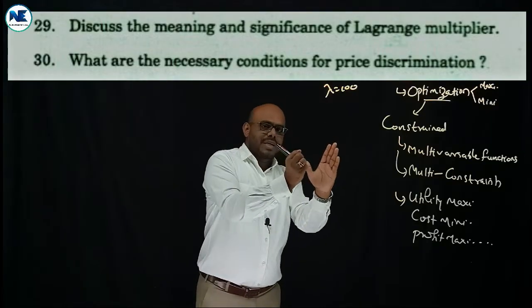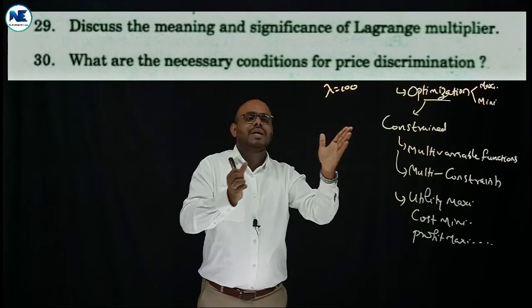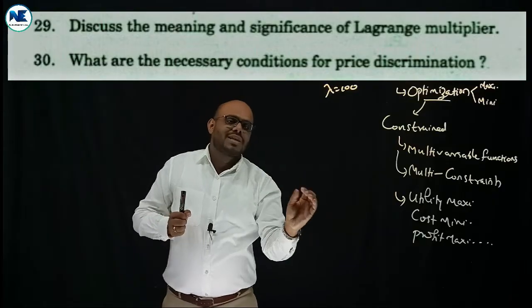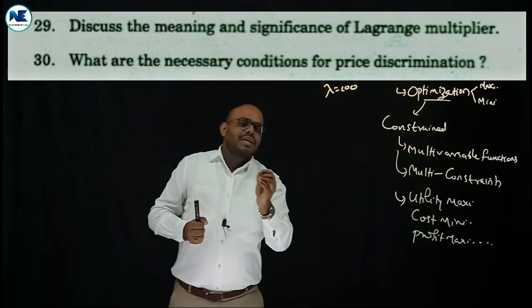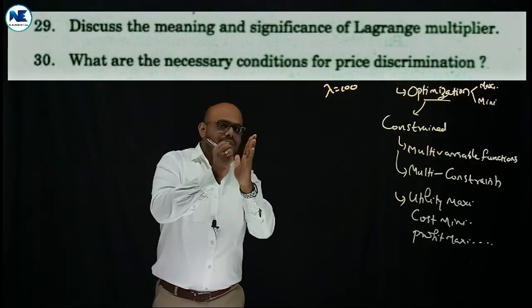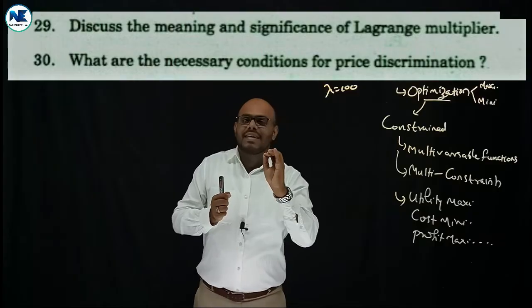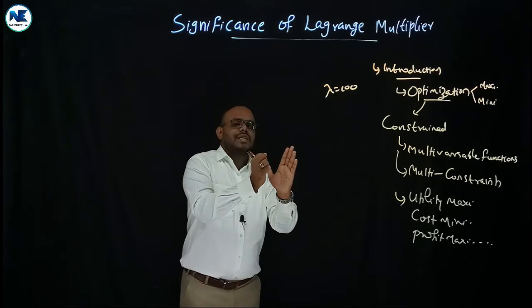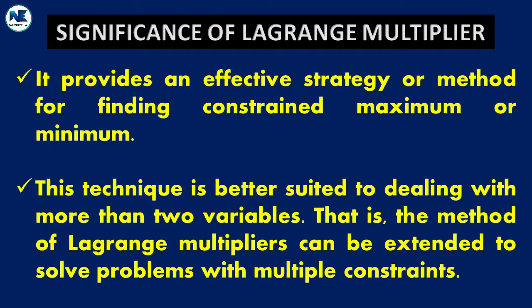For your answer structure: write a definition covering applications in constrained optimization — maximum and minimum — followed by the key points on significance. You can give a beautiful conclusion, and with this well-structured five-mark answer you will get maximum marks. The first point is that the Lagrange multiplier provides an effective strategy or method for finding the constrained maximum or minimum.